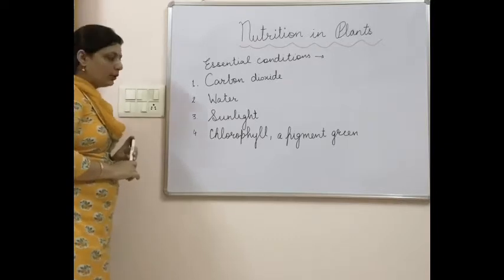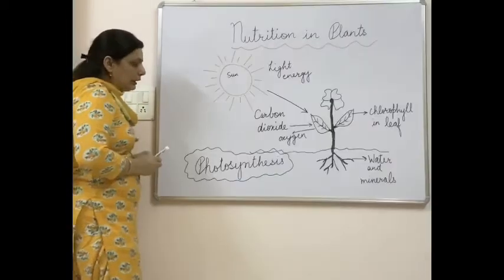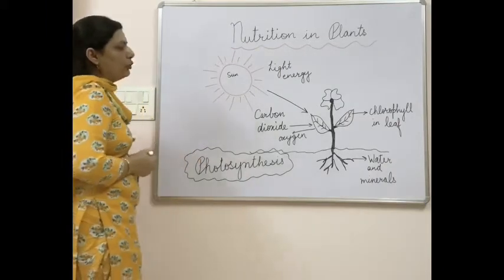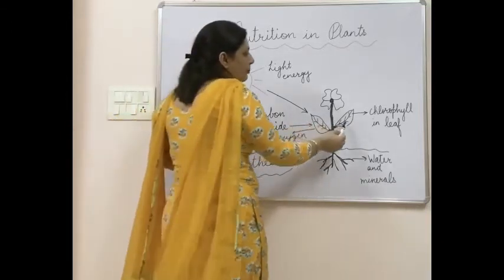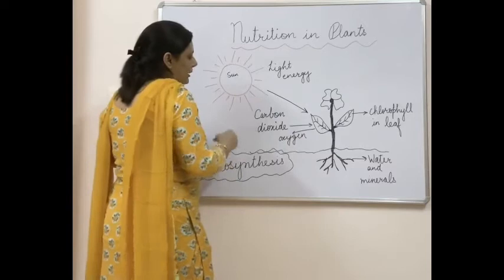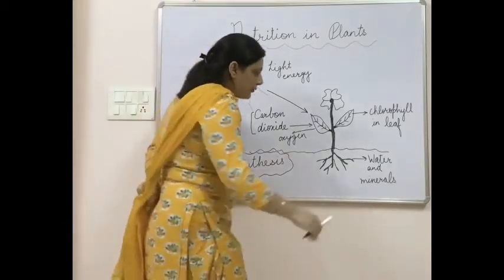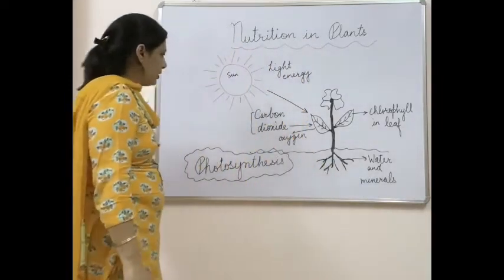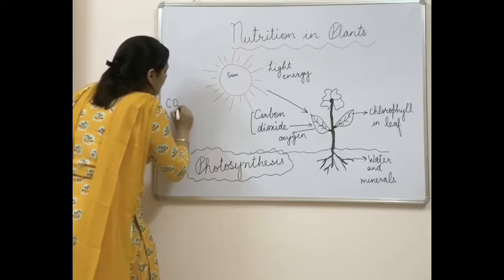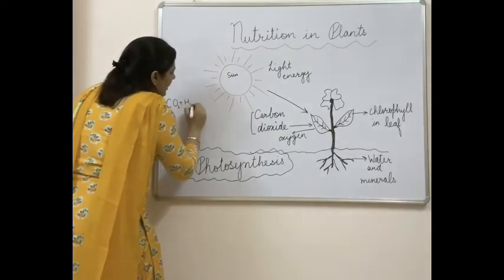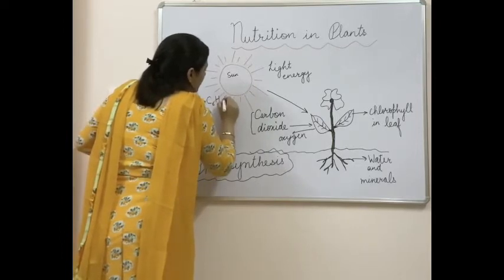Carbon dioxide, water, sunlight, and chlorophyll are all required for carrying out photosynthesis. Looking at this diagram: here is a plant with roots inside the soil. In the leaf, chlorophyll is present; in the atmosphere, carbon dioxide gas is present; the sun provides light energy; and the roots take up water and minerals from the soil. In the presence of sunlight and chlorophyll, carbon dioxide reacts with water in the leaf, leading to the formation of carbohydrate and oxygen.